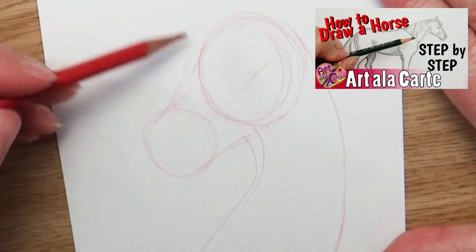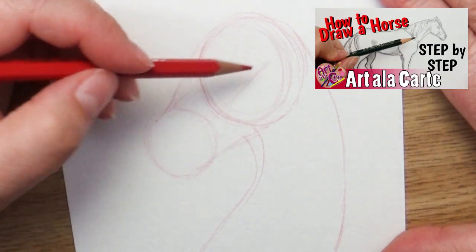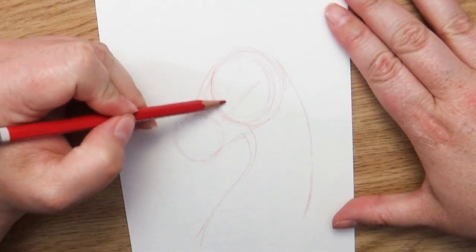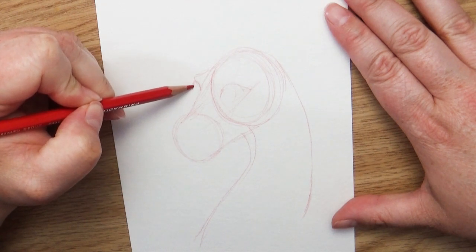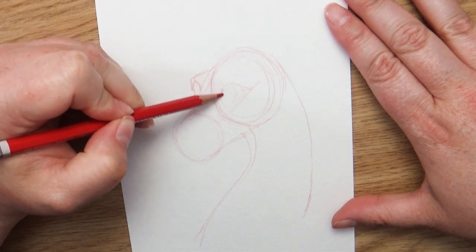So for those of you who have watched any of my how to draw horse videos, you'll probably recognize some of these shapes. I use a couple of circles for the main head and the muzzle. I'm not trying to get into the detail yet, just to get the shape blocked out.